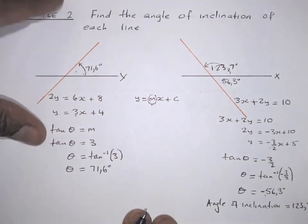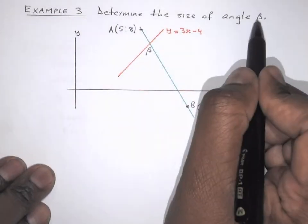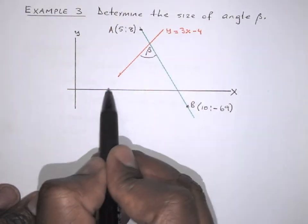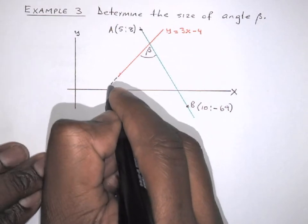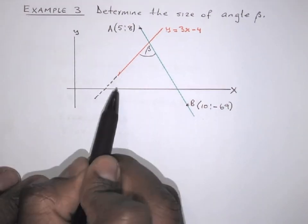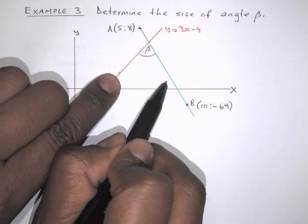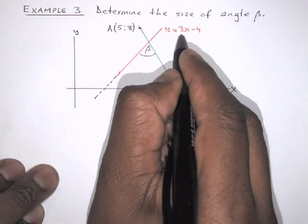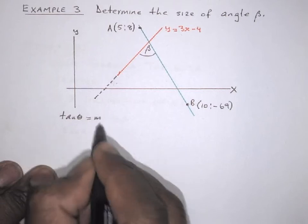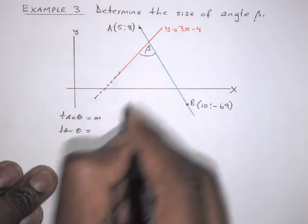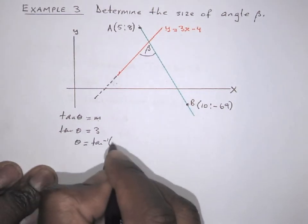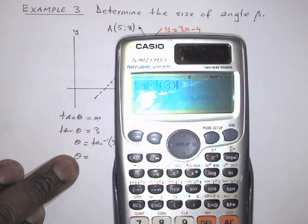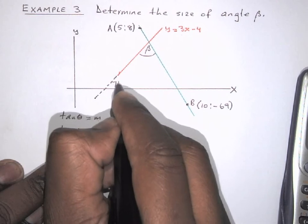Now let's look at another example. Here we've got to find the size of angle beta, which is an angle formed between two lines. The red line here doesn't touch the x-axis, so extend the line so it cuts the x-axis. Then we can find that angle. This line has a gradient of 3, so tan theta equals 3, meaning theta equals arctan of 3. Using the calculator, that gives 71.6 degrees.